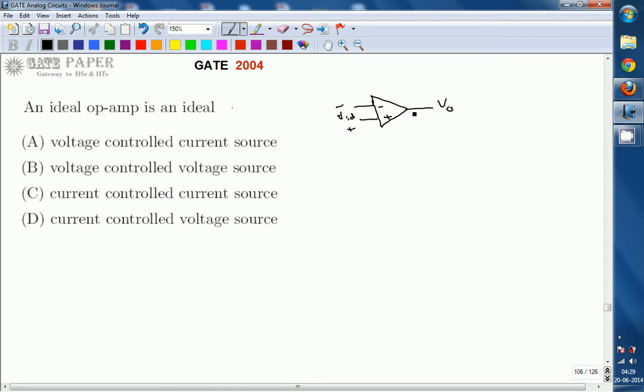And we know the relation between this output voltage and input difference voltage, which is V0 equals A times VID. A is the open loop gain times VID. VID is the difference between non-inverting and inverting terminal voltages. So A times V plus minus V minus.